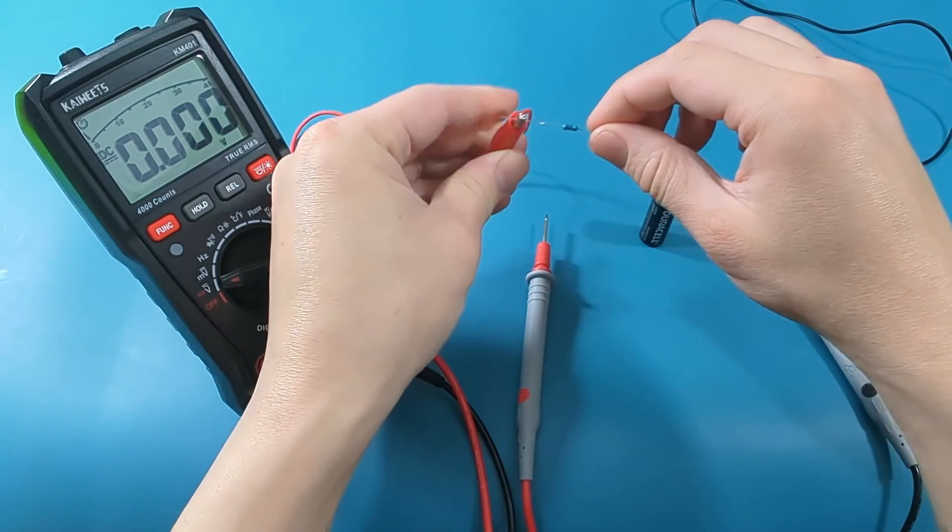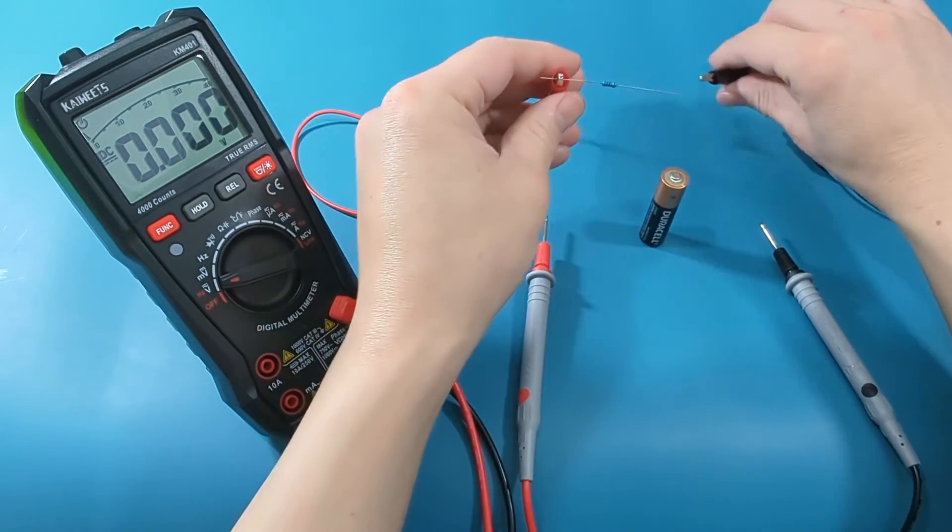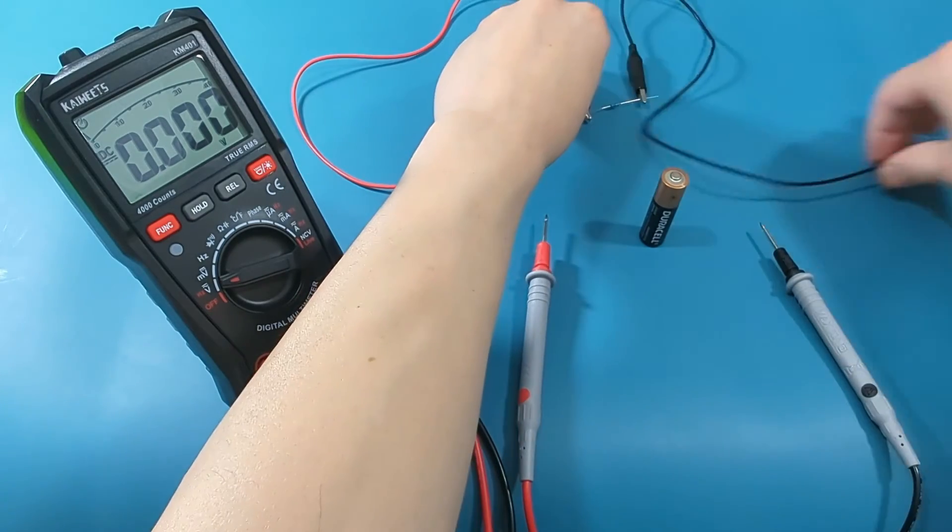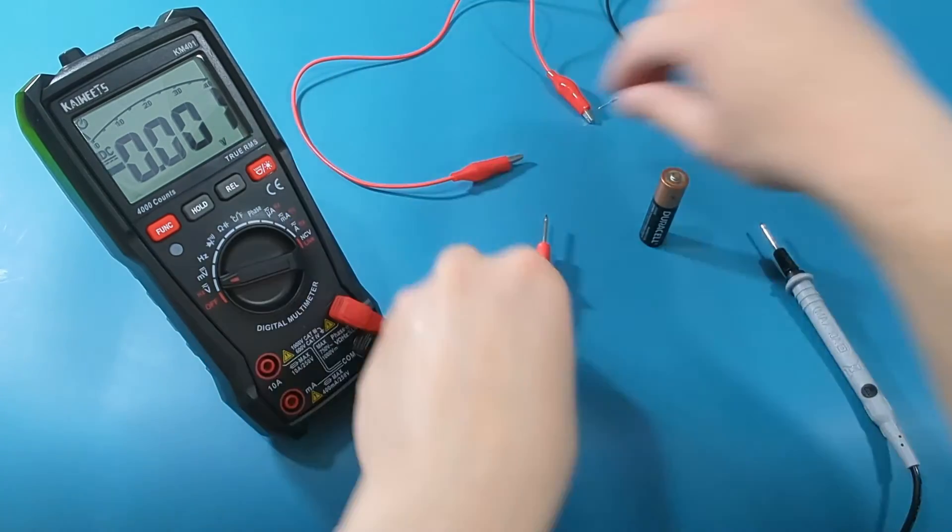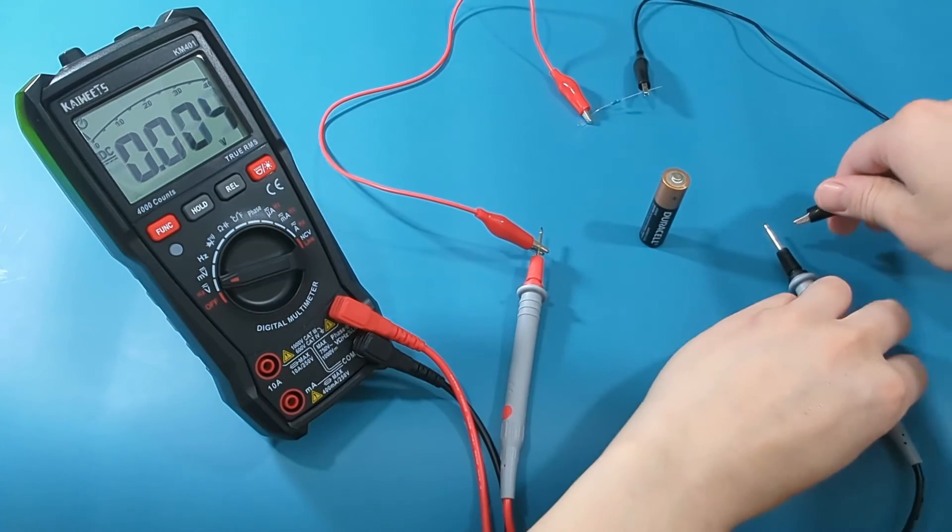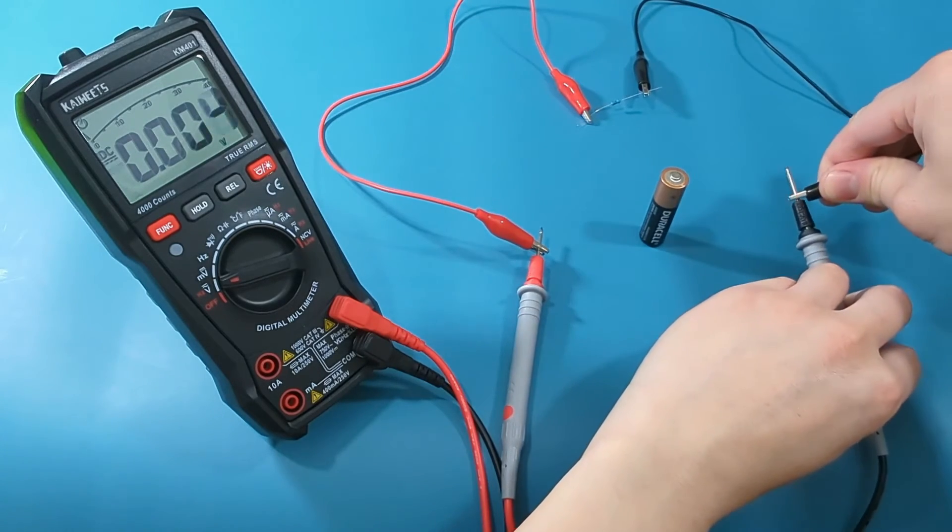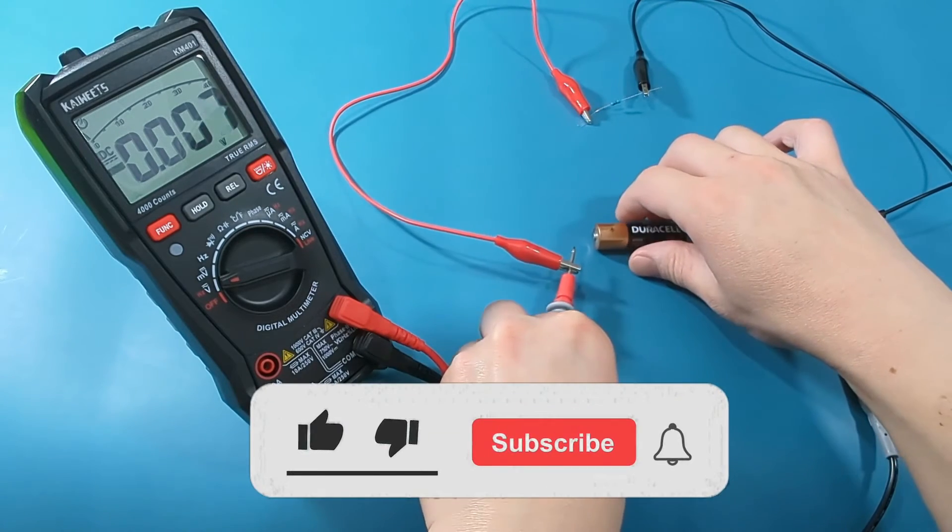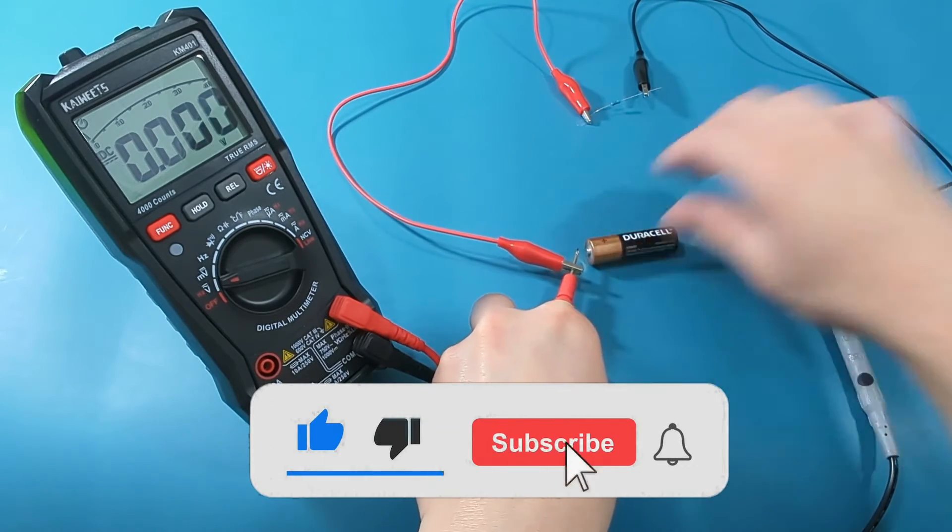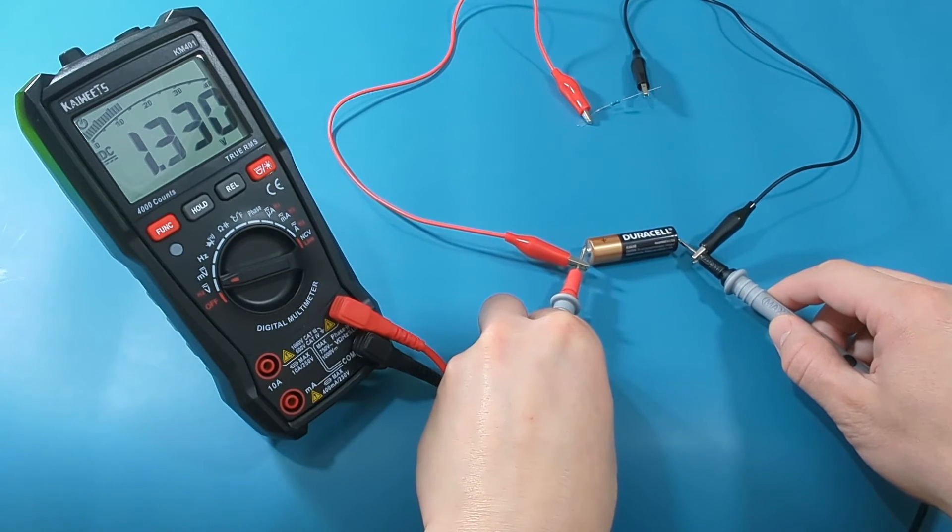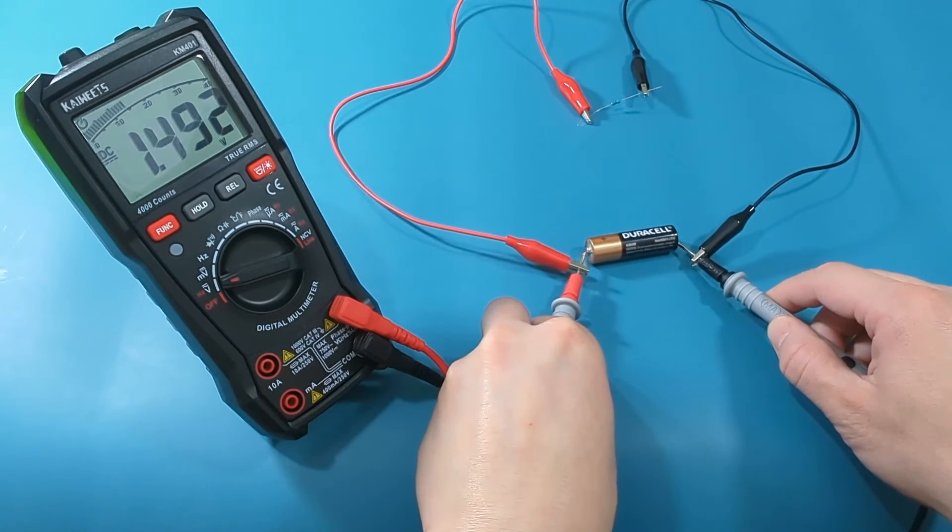You can use alligator clips to connect the resistor to the battery. Connect the alligator clips to the resistor. Connect the other end of the alligator clips to the probes. Touch the probes to each end of the battery.